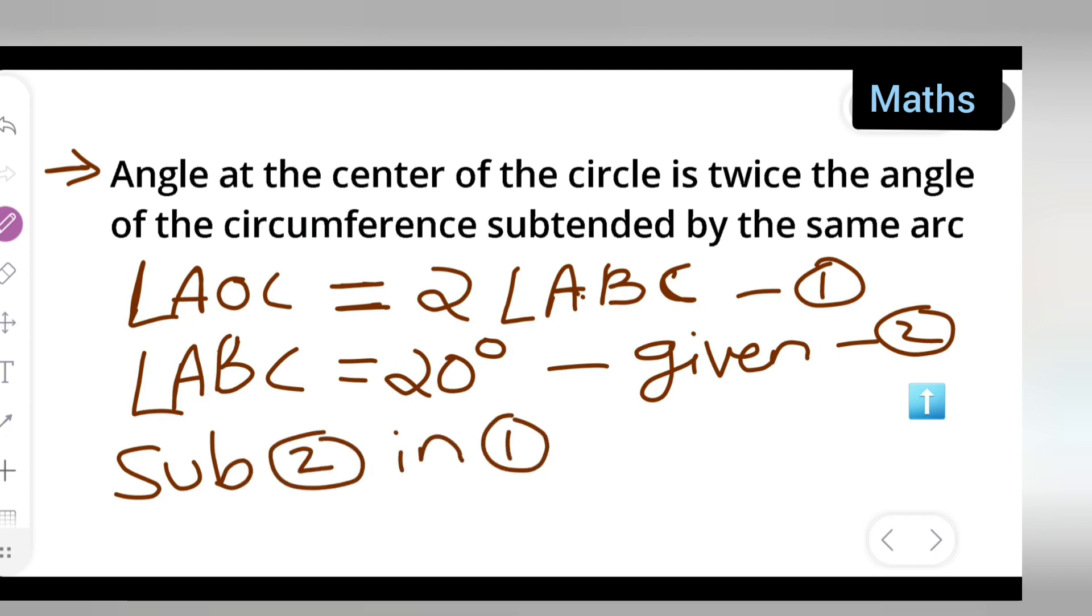What you will get is, angle AOC is equal to twice, multiply this by - now what is your angle ABC? Nothing but 20 degrees. So write down 20 degrees.